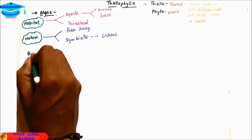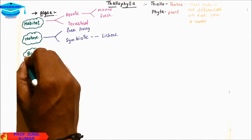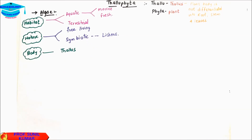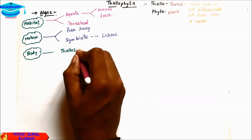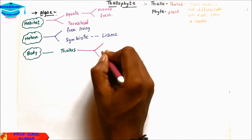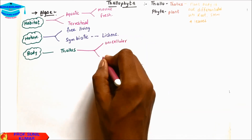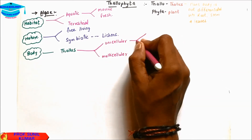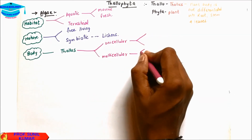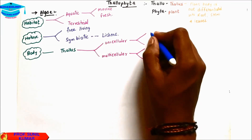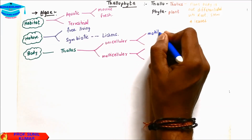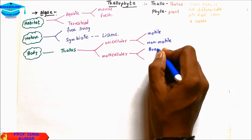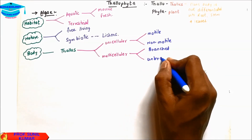The body of algae is Thallus. The Thallus is differentiated into unicellular and multicellular. Unicellular has two types: unicellular motile or unicellular non-motile. In multicellular, it is branched filamentous or unbranched filamentous.